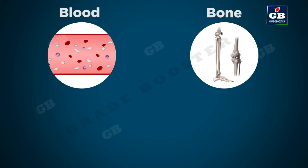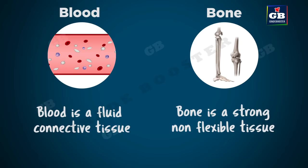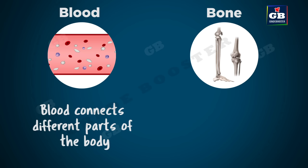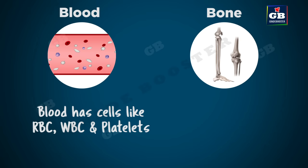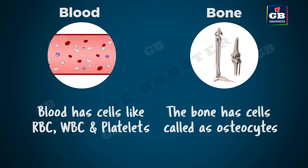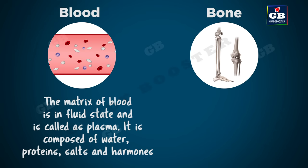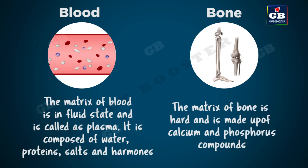Let us see some differences between blood and bone. Blood is a fluid connective tissue, whereas bone is a strong, non-flexible tissue. Blood connects different parts of the body, whereas bone gives shape and support. Blood has cells like RBC, WBC, and platelets; bone has cells called osteocytes. The matrix of blood is in fluid state called plasma, composed of water, proteins, salts, and hormones. The matrix of bone is hard and made up of calcium and phosphorus compounds.